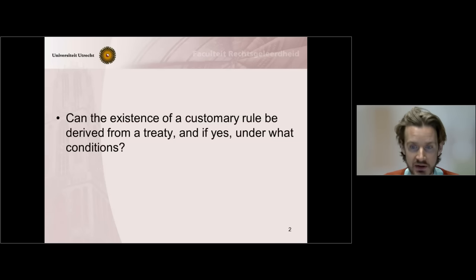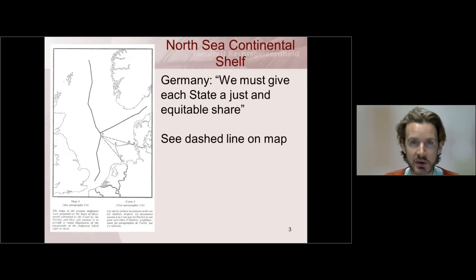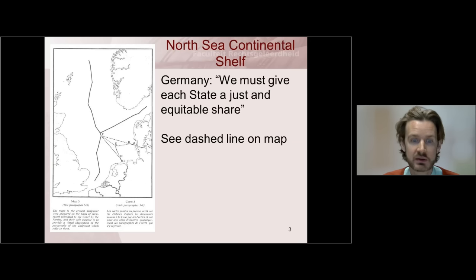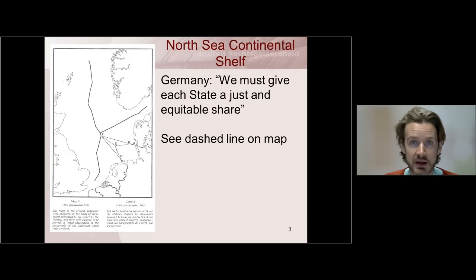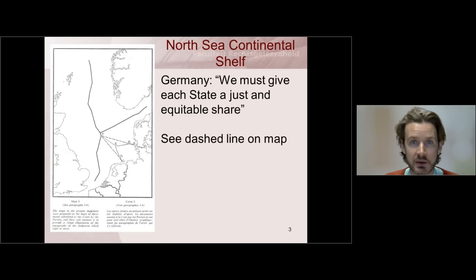The basic question I want to address is: can the existence of a customary rule be derived from a treaty, and if yes, under what conditions? The case was about the delimitation of the continental shelf in the North Sea, between Denmark and the Netherlands on the one hand and Germany on the other. They each proposed different ways to delimit the continental shelf. On the map in the PowerPoint you see different suggestions. The solid lines reflect agreements made earlier, so the controversy only relates to the dashed line and the dotted line.